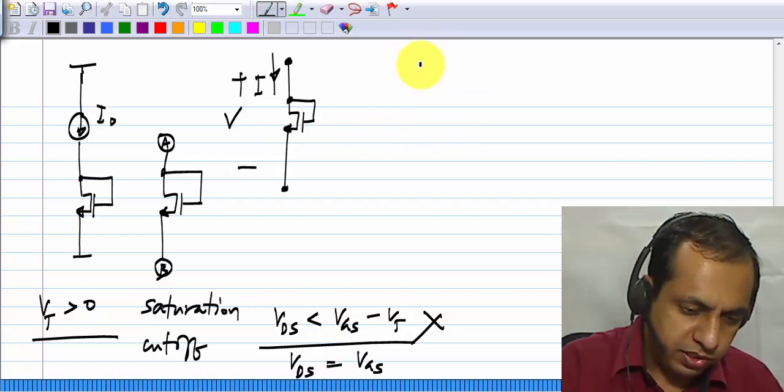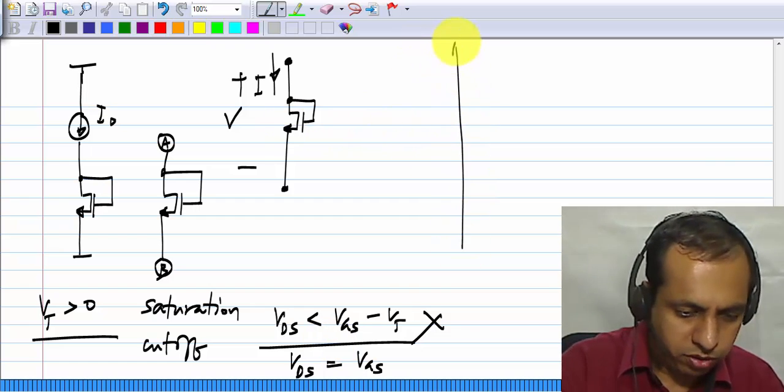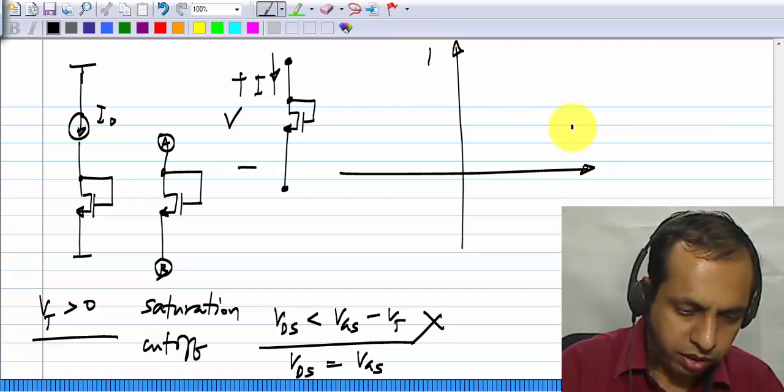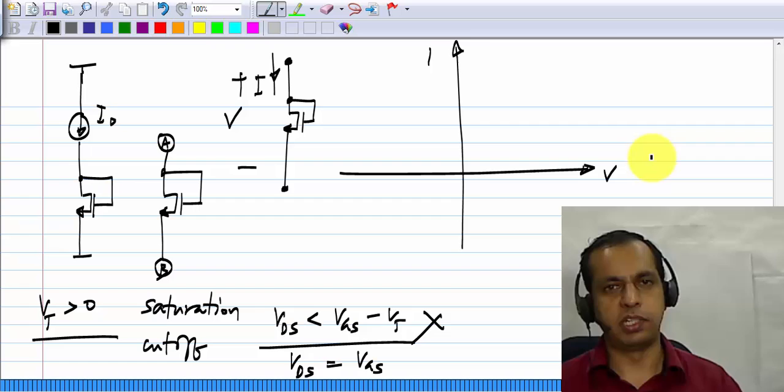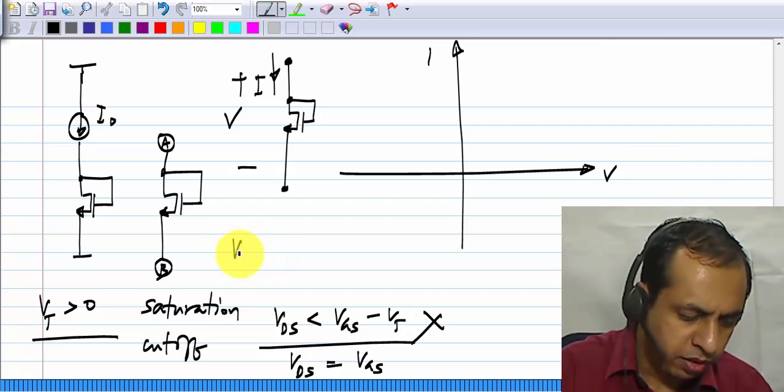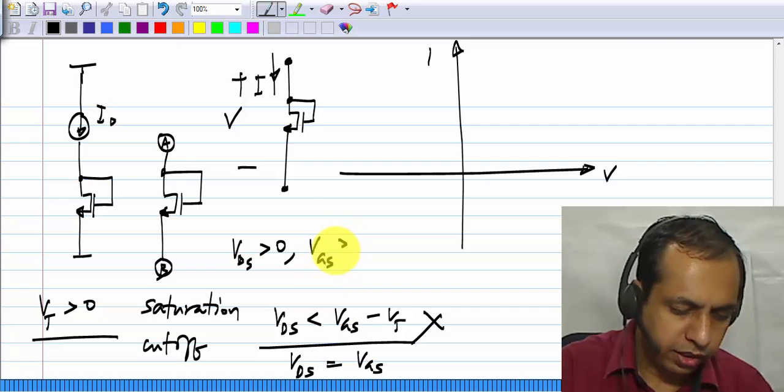What happens is that if I do plot the I V characteristic, I will plot it only for V greater than 0, because our model of the MOS transistor is valid only when the voltages are greater than 0.